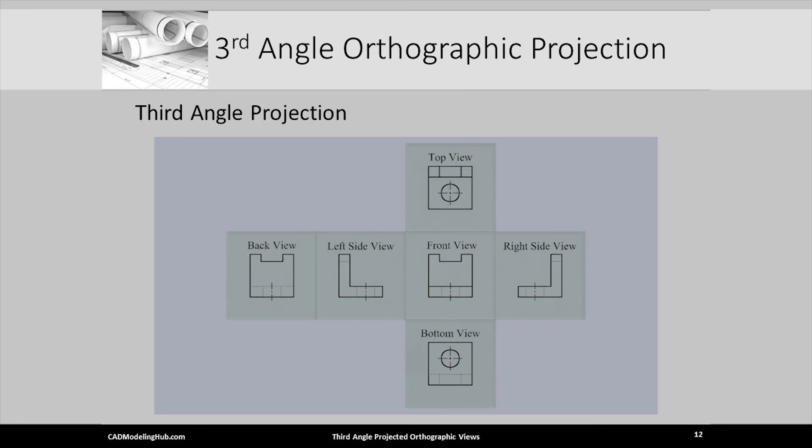The ASME third angle projection standard specifies these six views, their position and alignment with respect to a given or chosen front view.